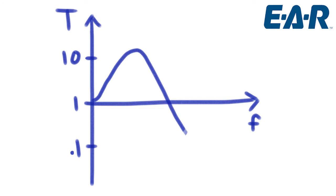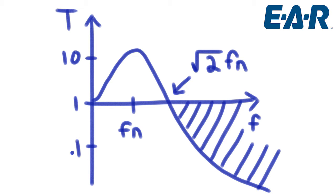Transmissibility can be graphed as a function of frequency. The blue curve you see is a typical example of an isolation curve. F sub n represents the natural frequency of the spring mass system. Root 2 times natural frequency is called the crossover frequency. And to the right of the crossover frequency is the isolation region. This is what we desire our driving frequency to be located in an isolation system.